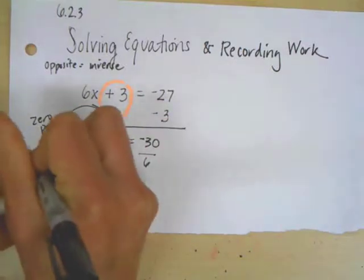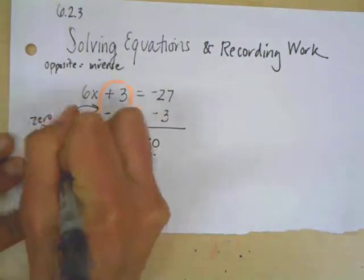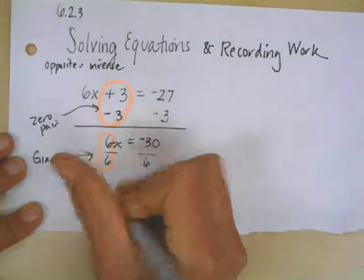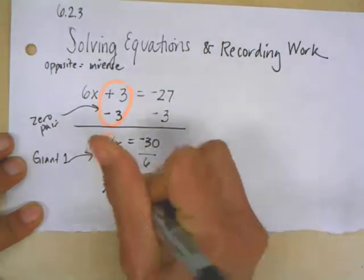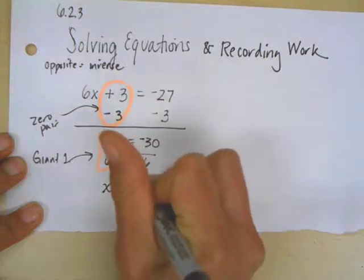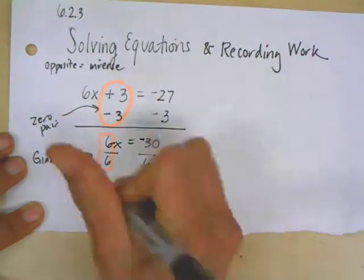So now I have basically 1x, or just x, is equal to negative divided by positive, negative, 30 divided by 6 is 5.